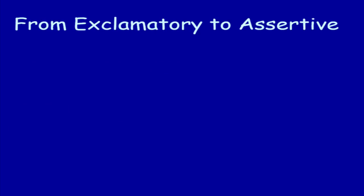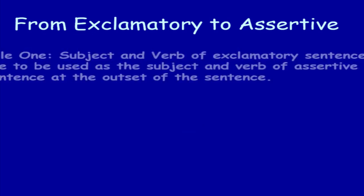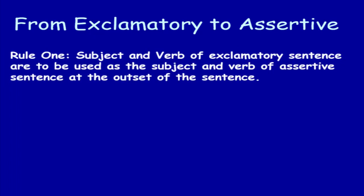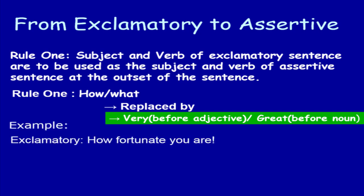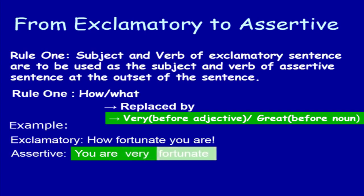Now we will discuss about how to change the exclamatory sentence into assertive sentence. Rule number 1. The subject and verb of an exclamatory sentence appear at the last, but in assertive sentence, write subject and verb at the very beginning. 'How' and 'What' in exclamatory sentences are replaced by 'very' before an adjective, and 'great' before a noun. Example: 'How beautiful you are.' The subject and verb are at the last. In assertive: 'You are very beautiful' — because 'beautiful' is an adjective, we use 'very' since an adverb modifies an adjective.